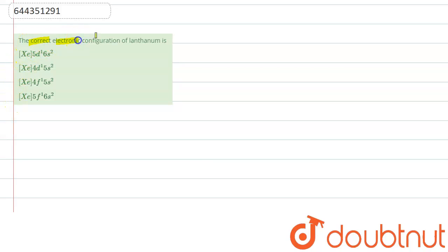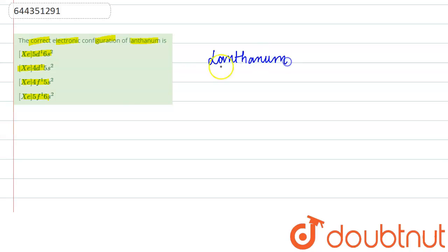What is the correct electronic configuration of Lanthanum? The options are: Xenon 5d1 6s2, Xenon 4d1 5s2, Xenon 4f1 5s2, or Xenon 5f1 6s2. The element given to us is Lanthanum, and the atomic number of Lanthanum is 57.